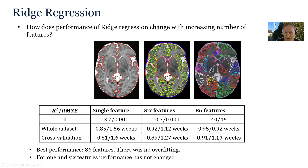However, for 86 features we got the best performance so far: an R2 score of 0.91 and a root mean square error of 1.17 weeks. So ridge regression was able to take advantage of all 86 features without introducing overfitting.